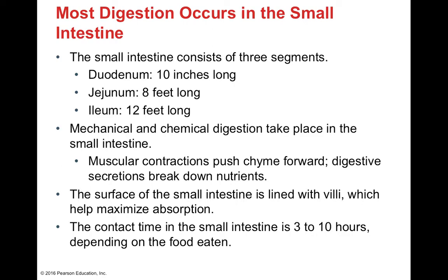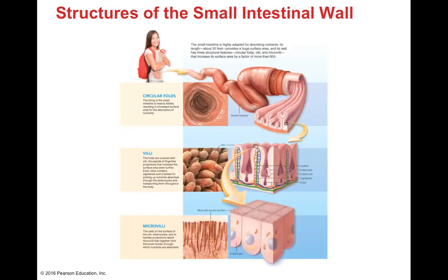After the stomach, we enter the small intestines, which has three major sections: the duodenum, jejunum, and ileum. We have both mechanical and chemical digestion, with muscular contractions moving chyme forward and digestive secretions breaking down nutrients. The small intestines is lined with villi, and at their tips we have microvilli, which maximize surface area and therefore maximize absorption. Food typically spends three to ten hours in contact with the small intestines.